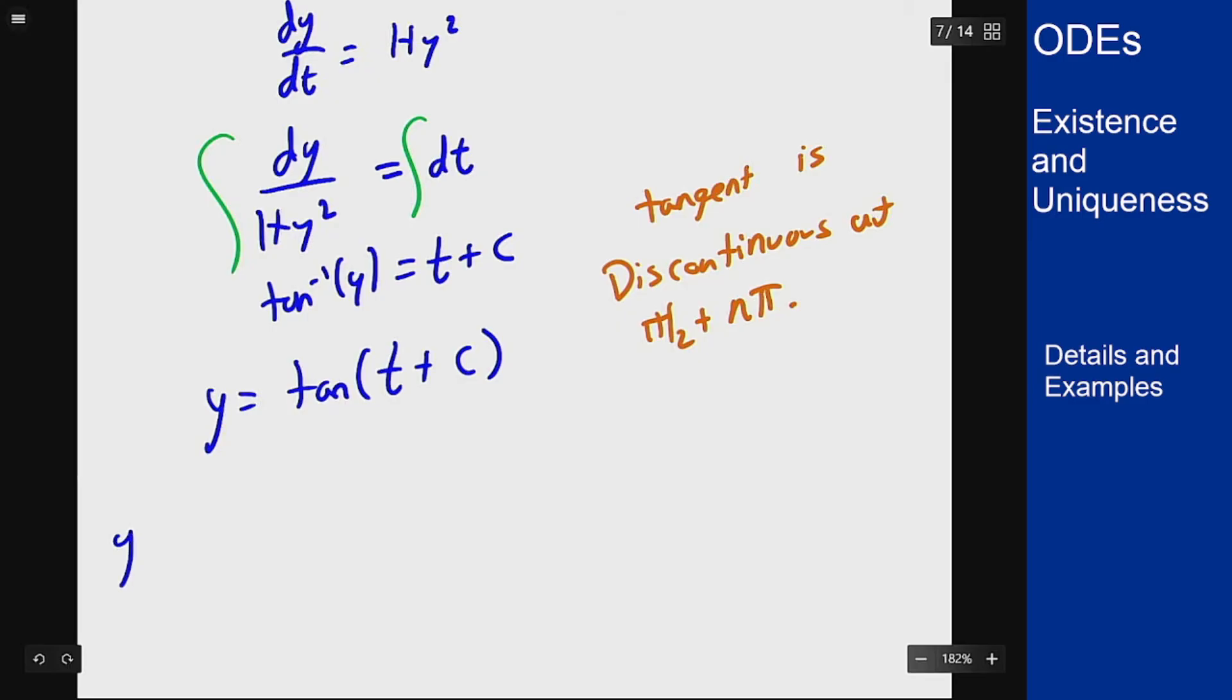So if I take y(0) = 0 and I plug in 0 for y and 0 for t, I'll get tan(c) = 0, so I can take c = 0. In that case my solution is just tan(t) and this exists on (-π/2, π/2) because it breaks down at those endpoints. It goes to infinity.